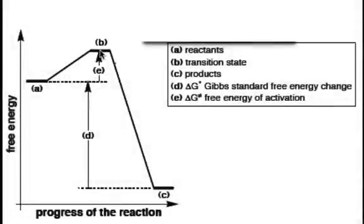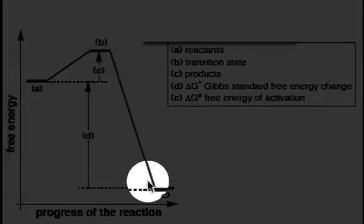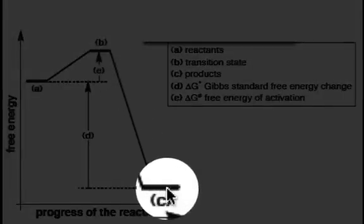This transition state shows the highest energy barrier that a reaction must proceed through in order to get to the products. The products are shown at the minimum here, C.